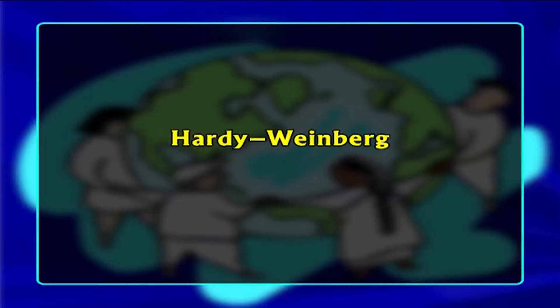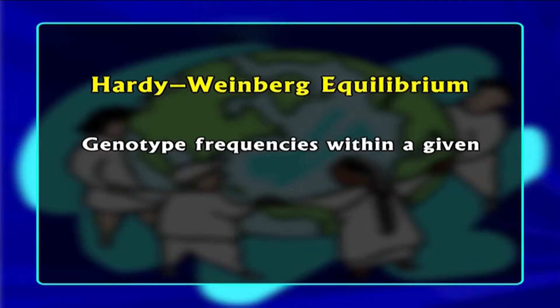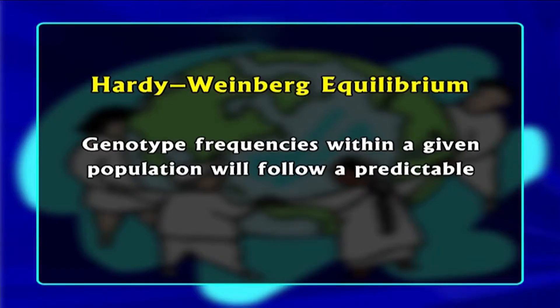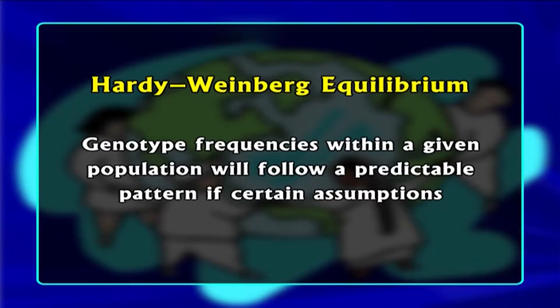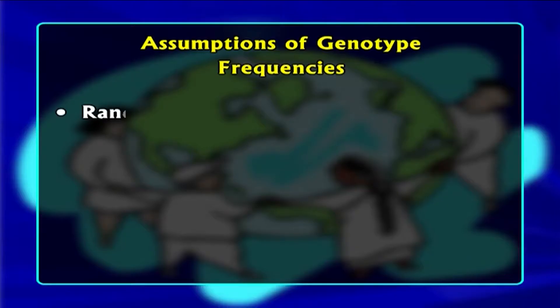Now dear students, let's understand Hardy-Weinberg equilibrium. The Hardy-Weinberg law is one of the founding principles of population genetics. According to the Hardy-Weinberg law, the genotype frequencies within a given population will follow a predictable pattern if certain assumptions are met. The assumptions are: number one,